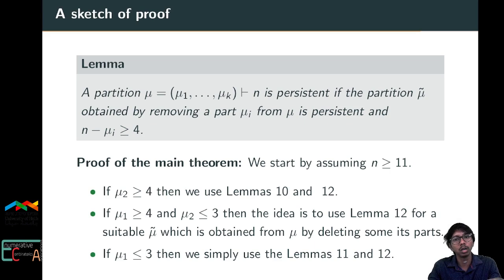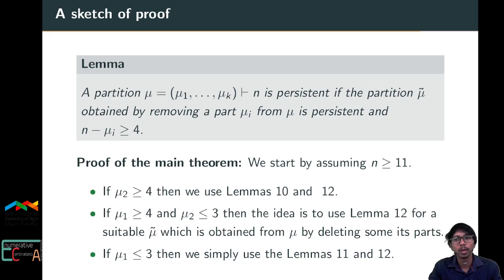If 1 also does not occur and 3 and 2 each occur at most once, then μ₁ ≥ 6. Since (p, 3) is persistent for p ≥ 6, we conclude (μ₁, 3) is persistent, and by the reduction lemma, μ is persistent.